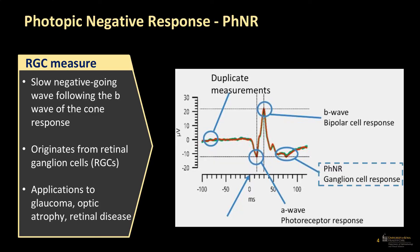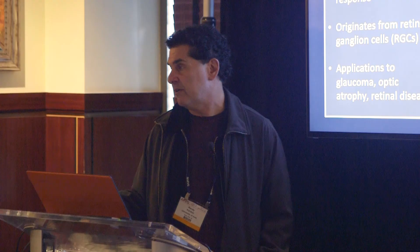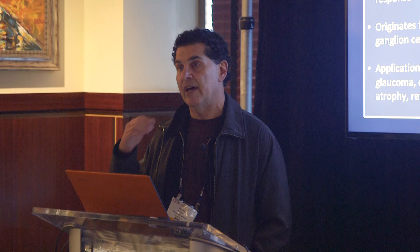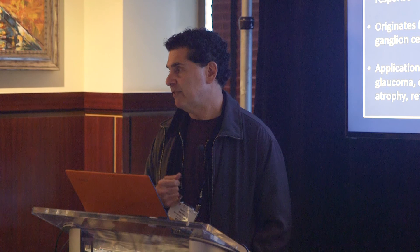Most of you are probably acquainted with the photopic negative response. Most of the literature uses a flash photopic negative, but what the RediVal is designed for is a steady-state 3.4 Hz average signal with a red stimulus on a blue background. This is a typical average response using skin electrodes, not a corneal electrode. We usually do two one-minute runs — the red and green traces are just the two runs superimposed. It's fairly reproducible because at 3.8 Hz for a minute, you have about 180 stimuli being averaged, so you gain a lot of signal-to-noise ratio from all that averaging.